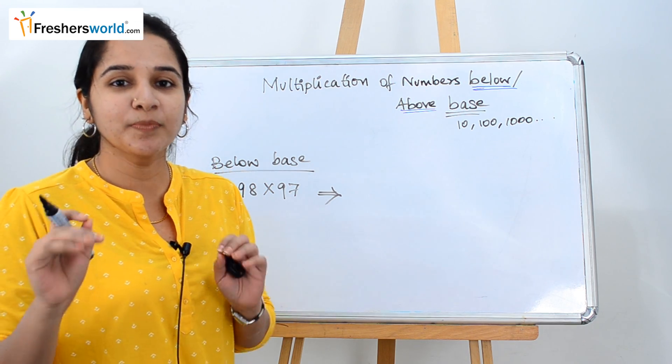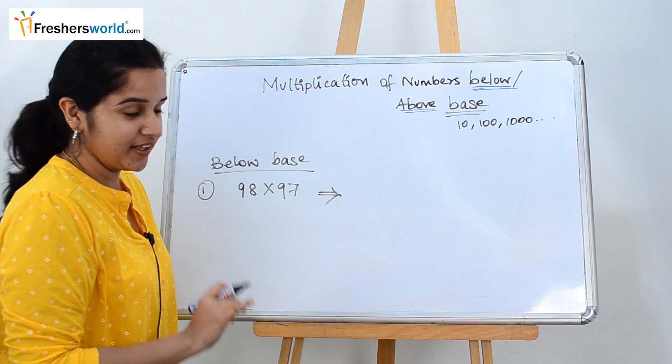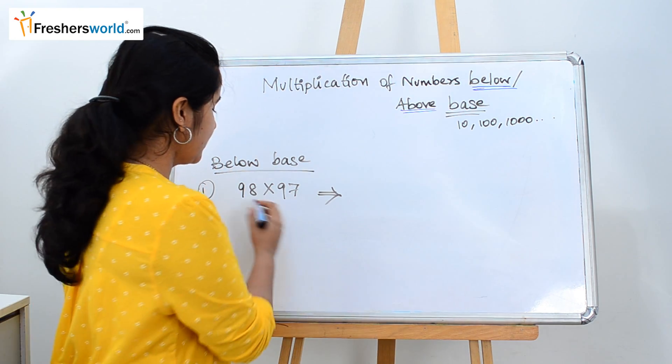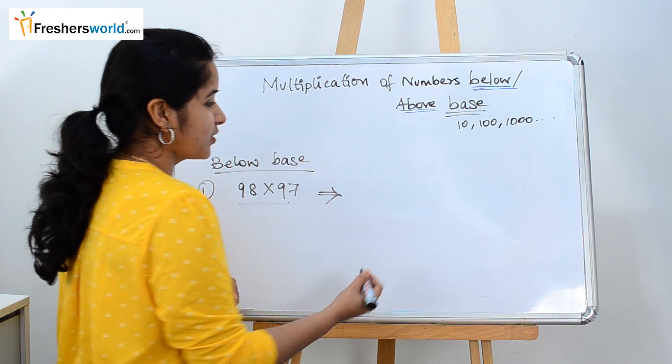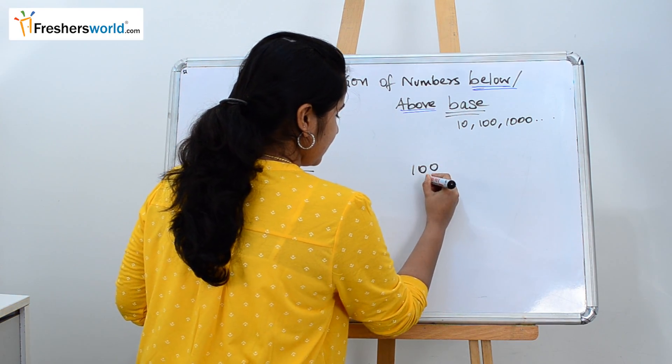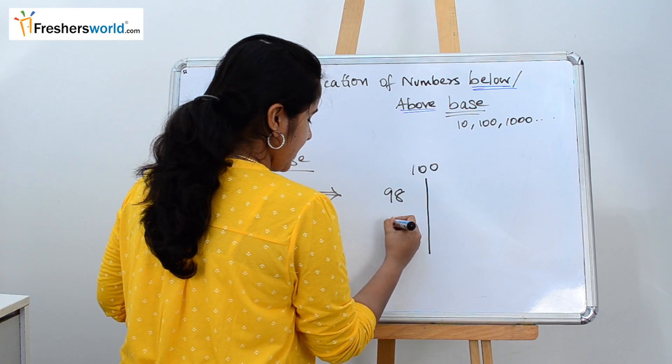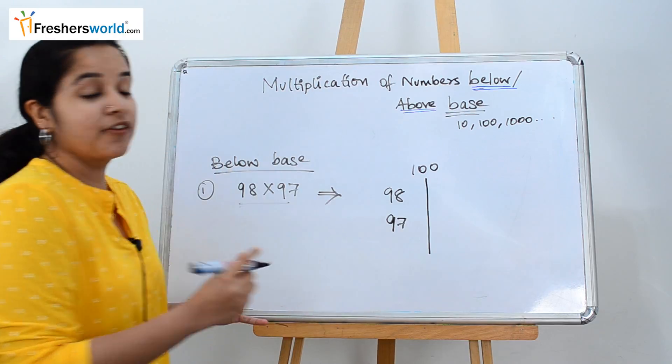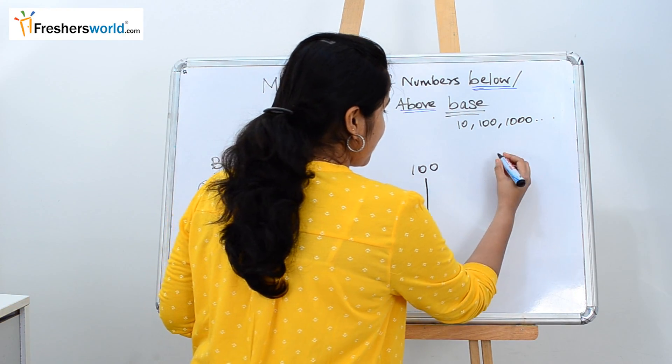First let's go to below the base and the first question is 98 times 97. The first step is which base it is closer to. We can obviously see it is closer to the base 100. So divide it. So what do we have? 98 and 97. First step is identifying the base. Second step is subtracting it.